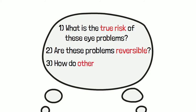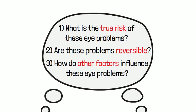How do factors like weight, race, age, gender, and pre-existing illness affect the chances of having eye problems?